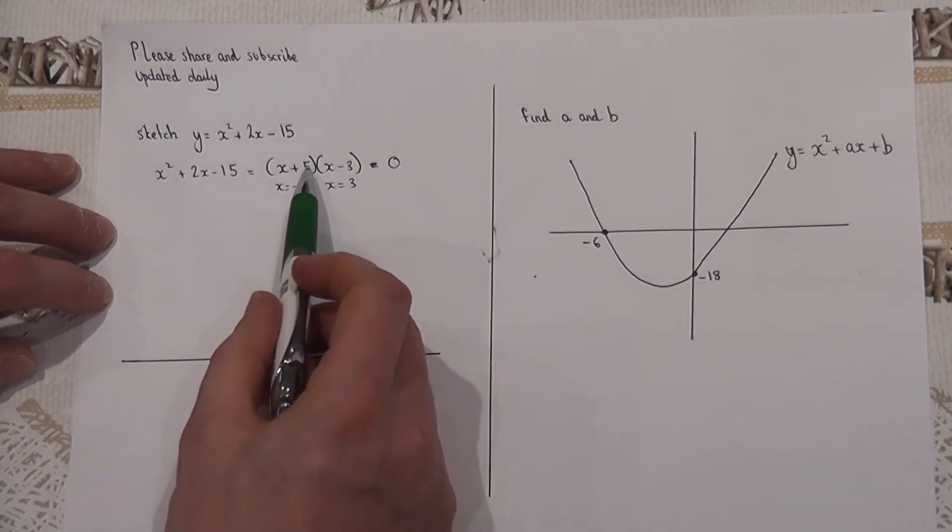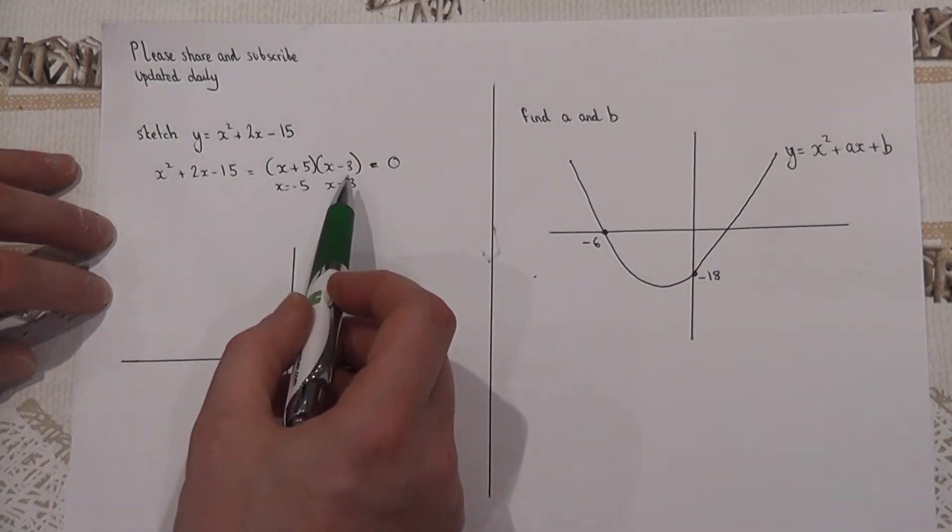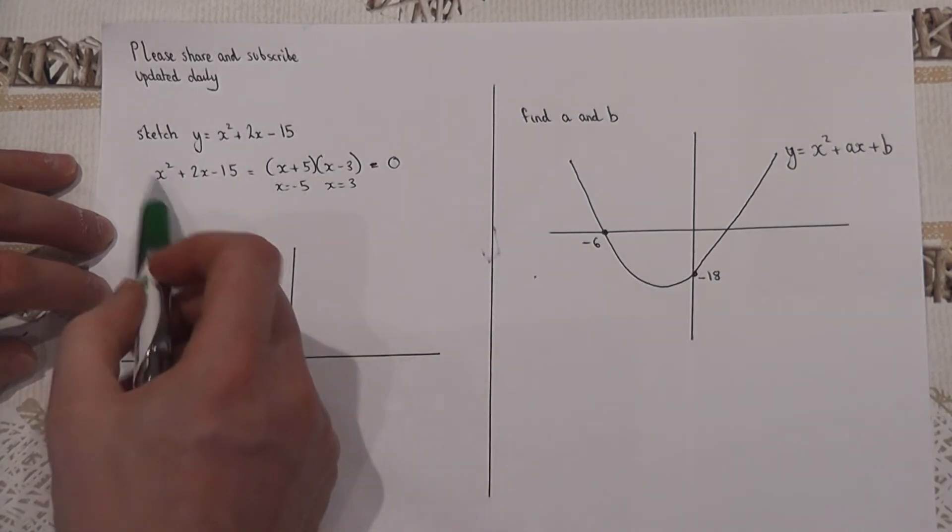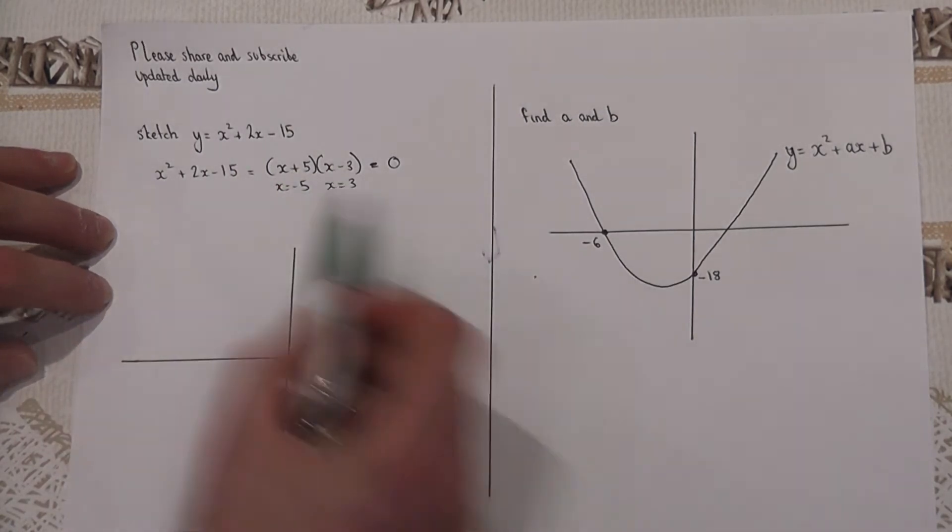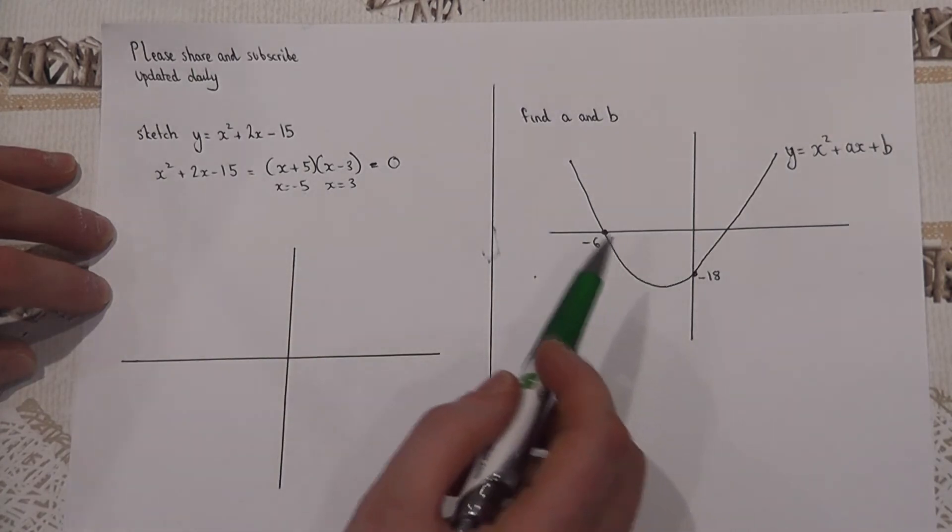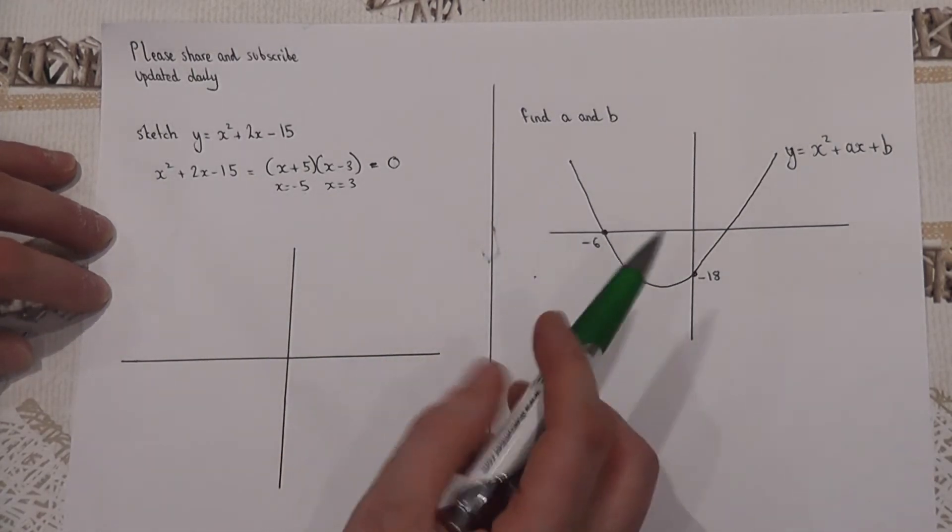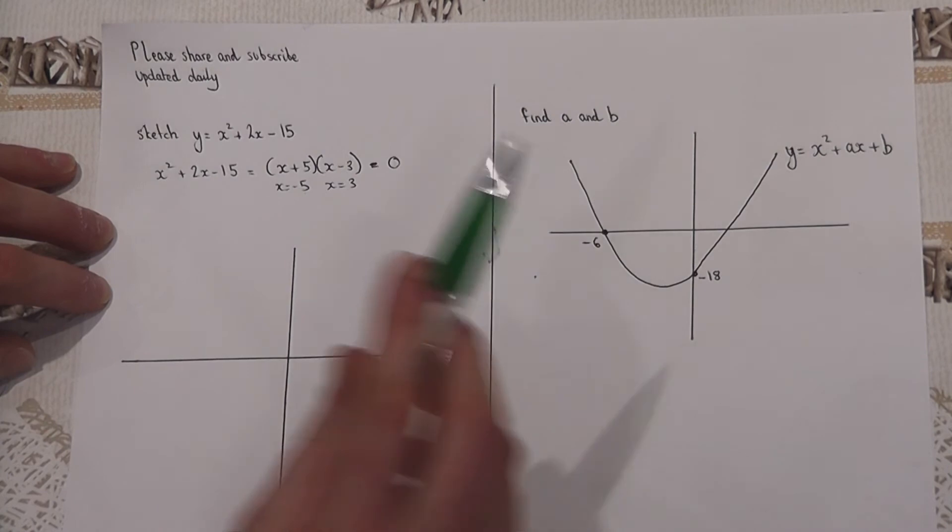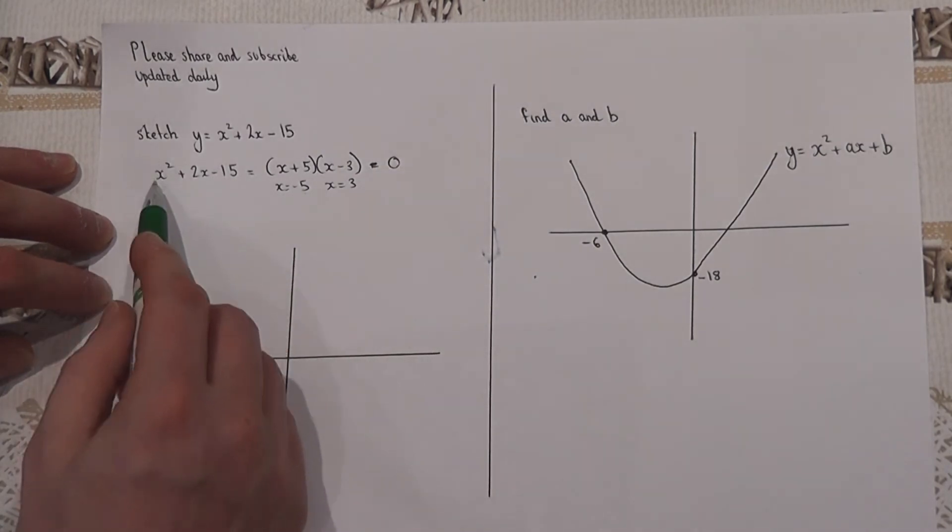So if we get the factors we can find the roots. And in simple ones where it's just an x squared, it is just the numbers in the brackets with the sign changed. But that's not always the case, so please be careful to learn that as a goldfast rule that only works when it's just one x squared.